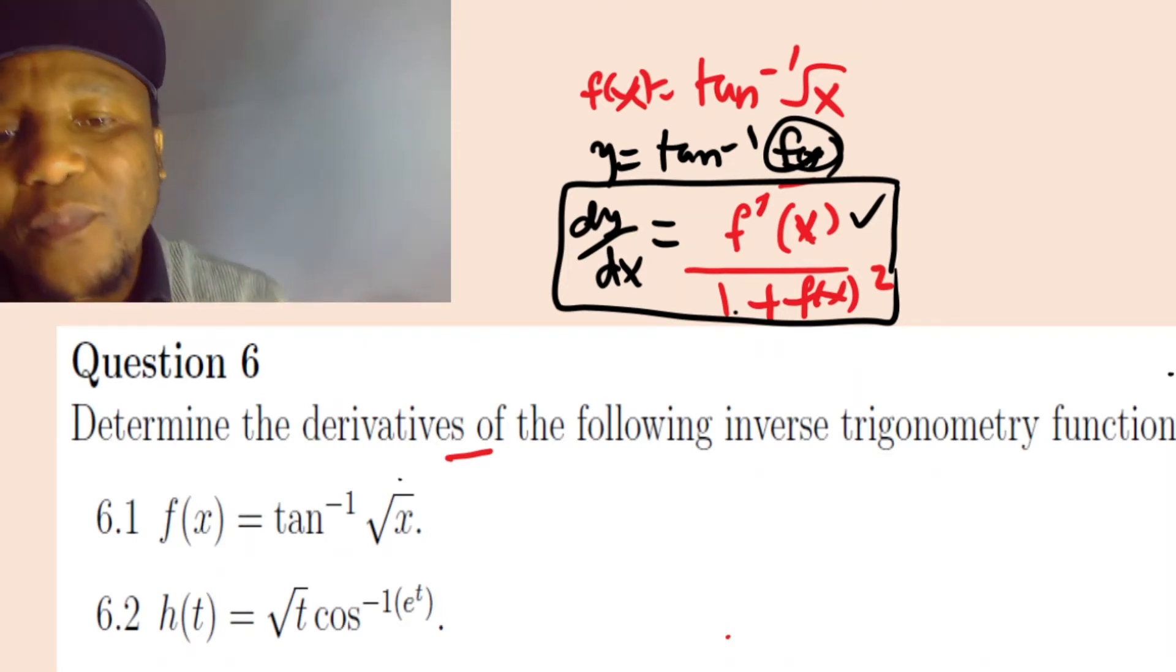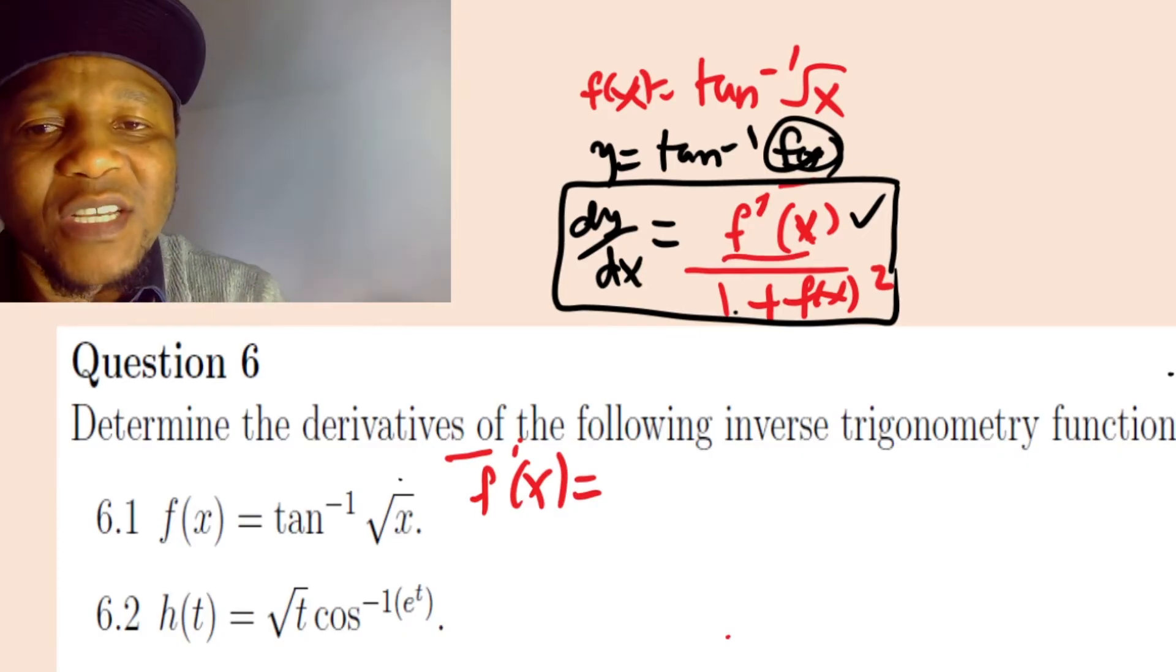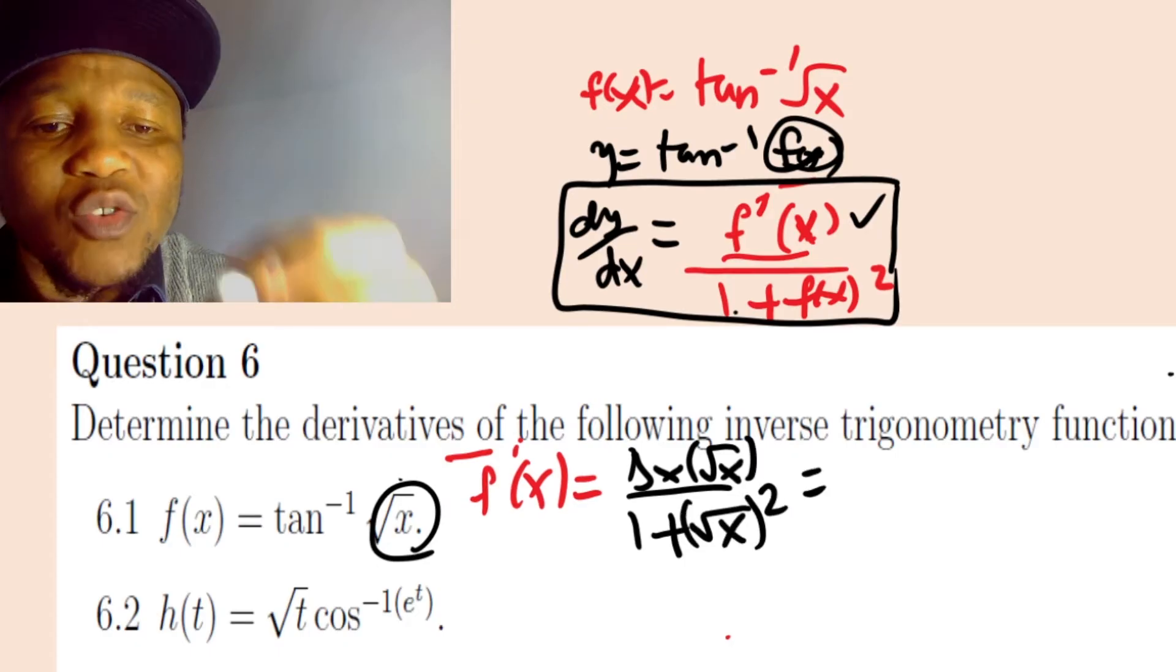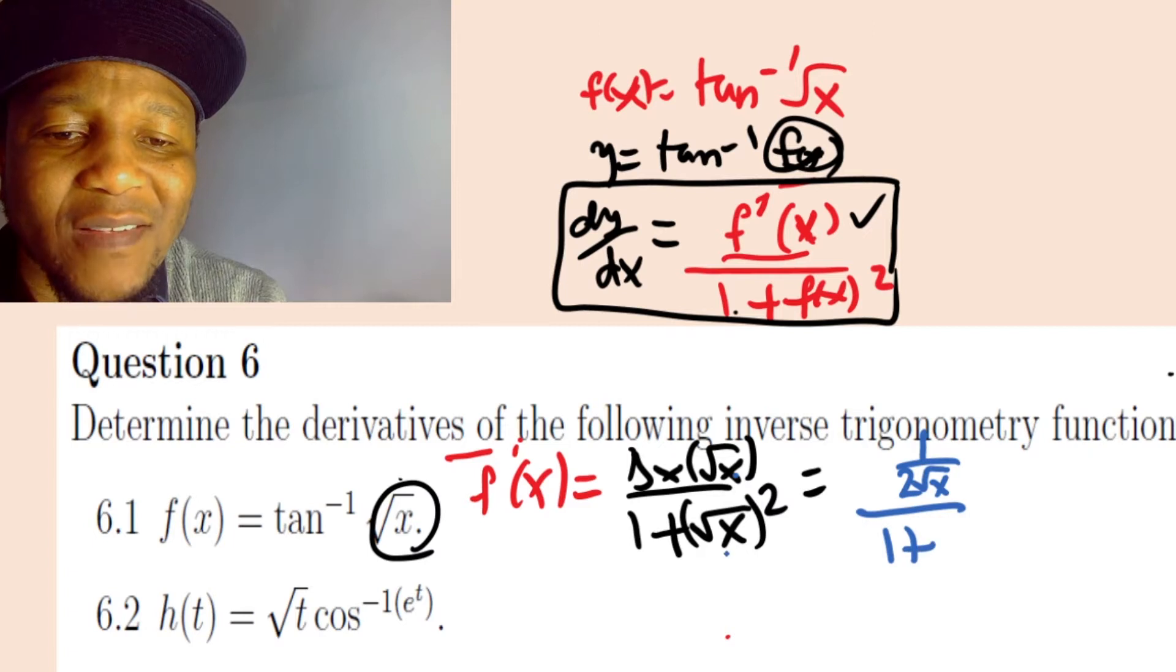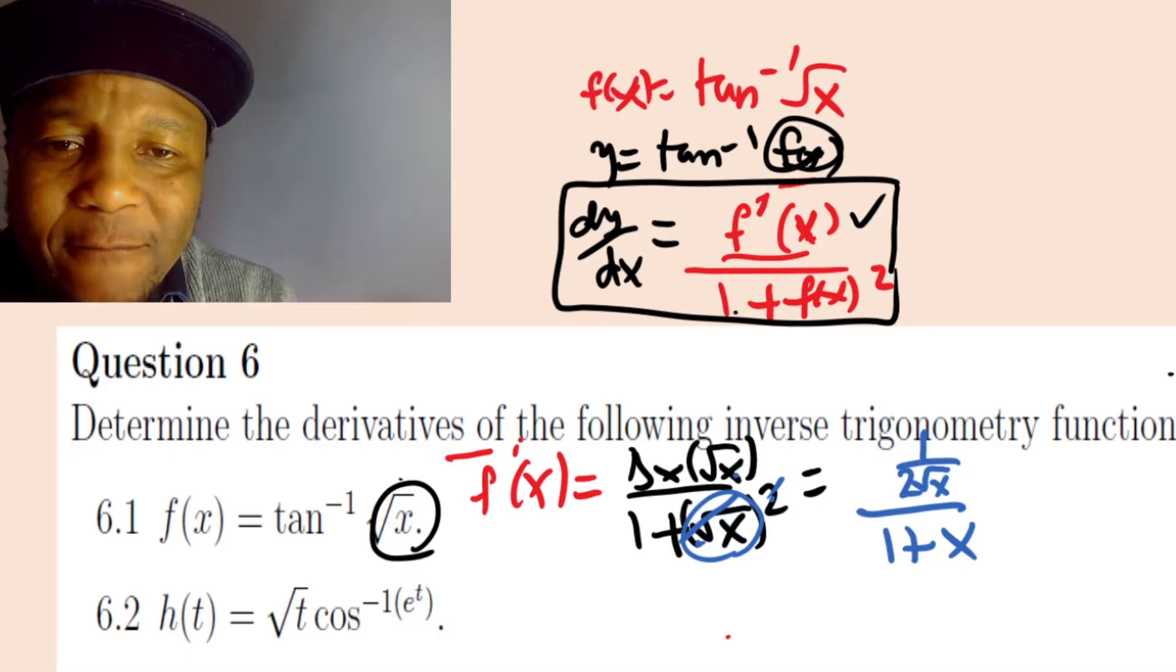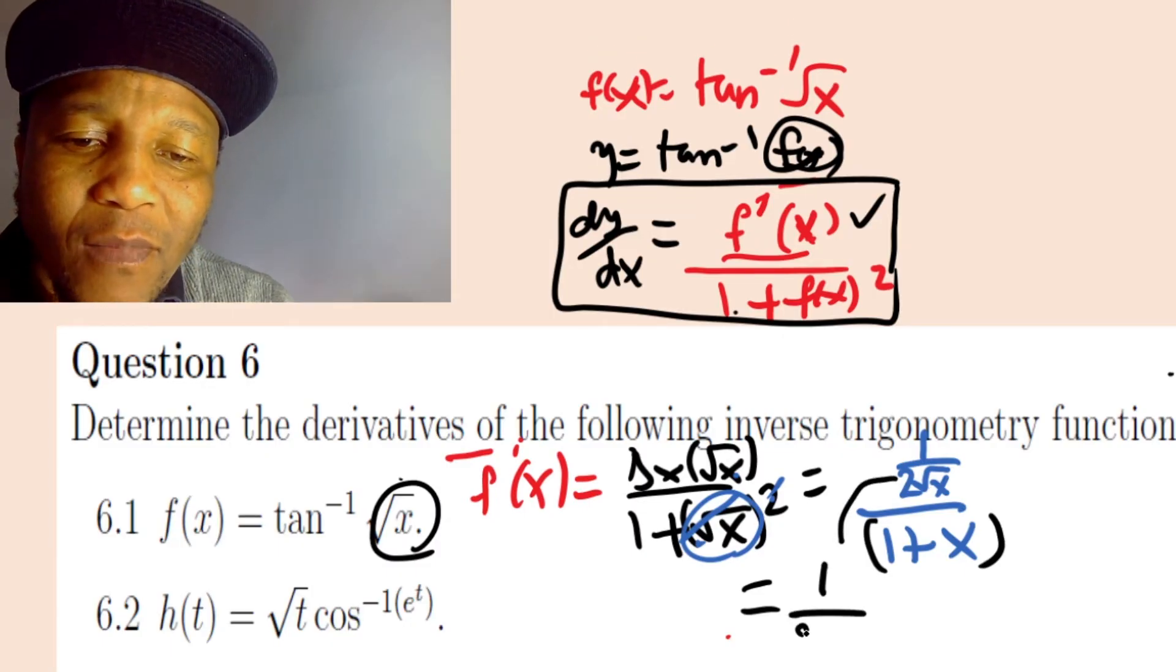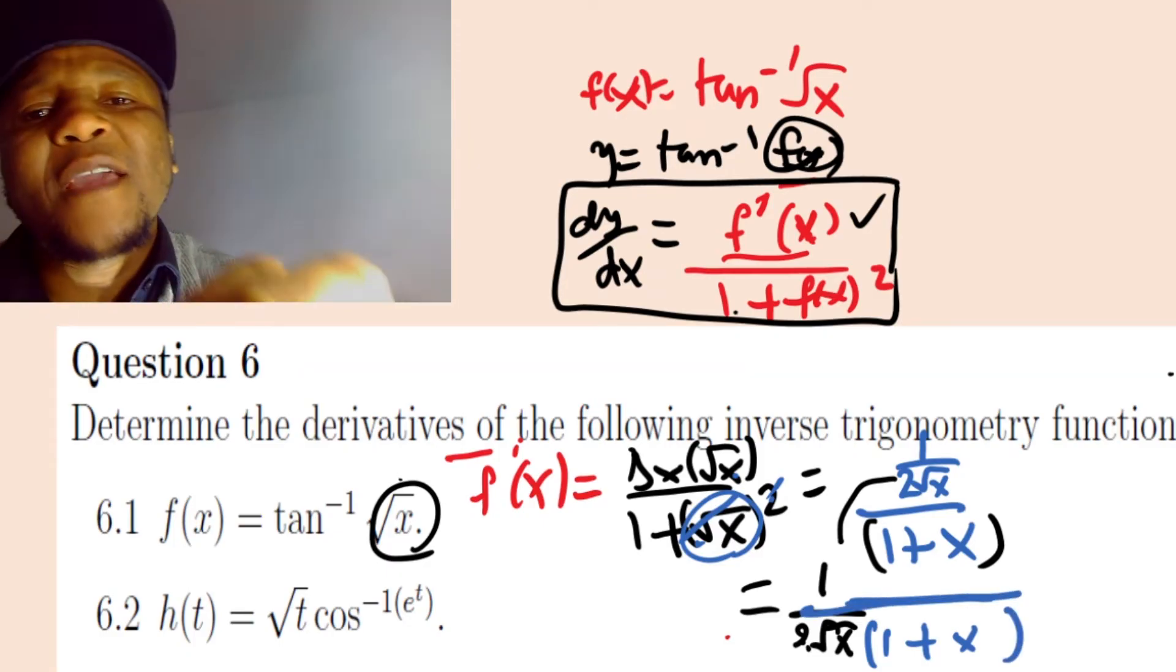For this question we use the same tactics. f prime equals the derivative of the function. When you derivate the square root of x, it gives us 1 over 2 square root of x, over 1 plus x, because this cancels and gives us x. So the final answer is 1 over 2 square root of x times 1 plus x.